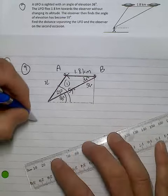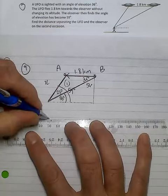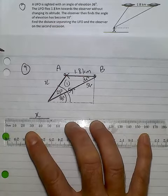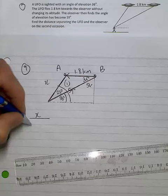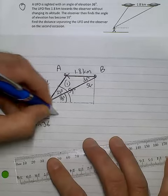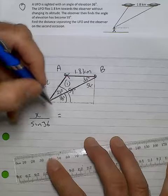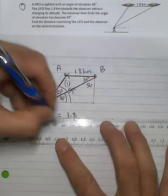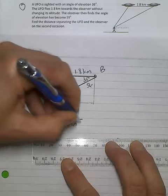So x over sine 36 is equal to 1.8 divided by the sine of 23.